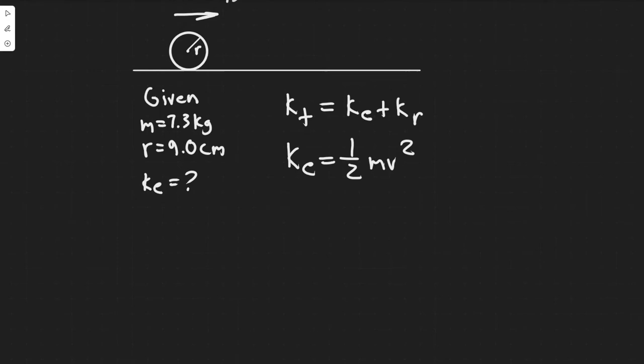The formula for that, you can denote by kr. I'm just using my own symbols. You can use whatever you want, but the rotational kinetic energy is 1 half multiplied by the inertia times the angular velocity omega squared.